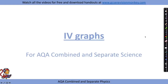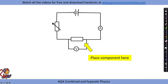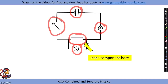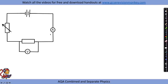Moving on to the IV graphs required practical — you may have heard these called IV graphs or current-potential difference graphs, with I standing for current and V for potential difference. The circuit we build is the same throughout; what we change is the component being tested. We set up a basic circuit with a battery or cells, an ammeter to measure current, a voltmeter to measure potential difference, and a variable resistor to change the resistance and therefore the current.